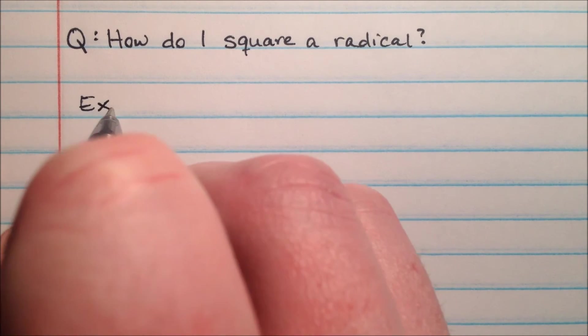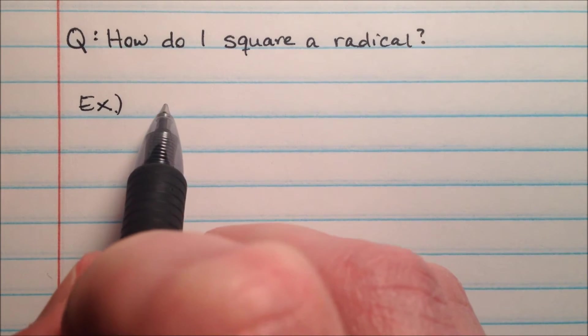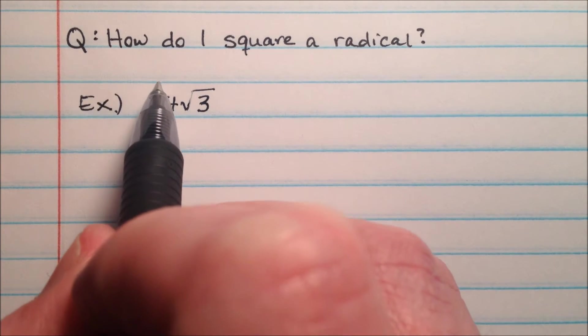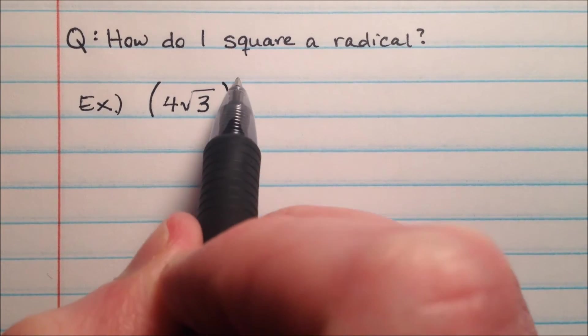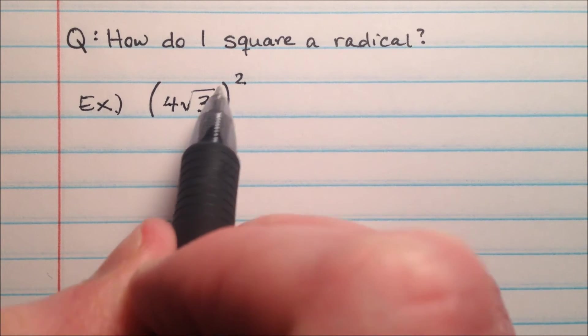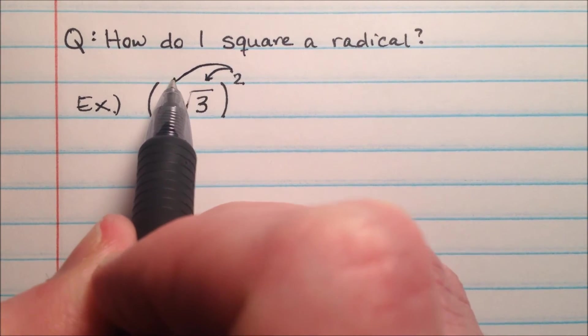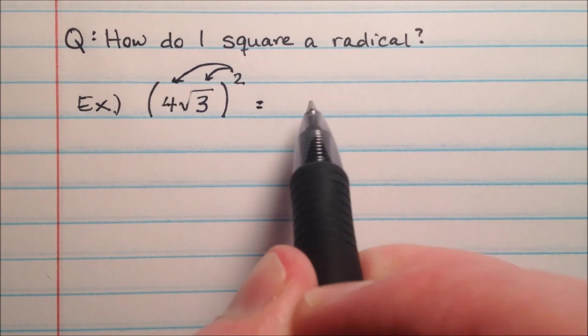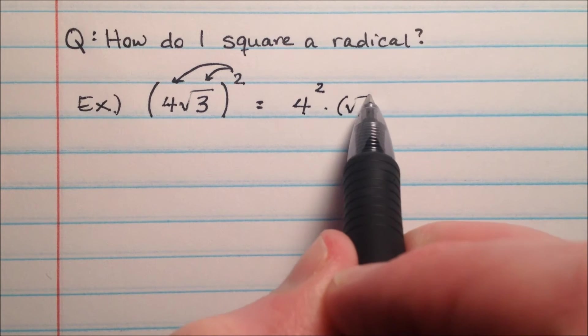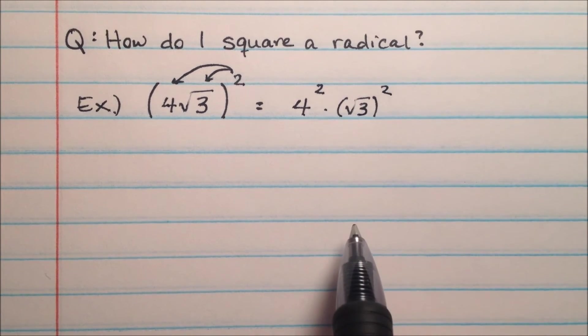So let's look at a first example. If we have something like 4 times the square root of 3 as one of our side lengths, and we're going to square this, since this 4 and this square root of 3 are being multiplied, we can distribute this square to both terms. So really what that's going to look like is 4 squared times the square root of 3 squared.